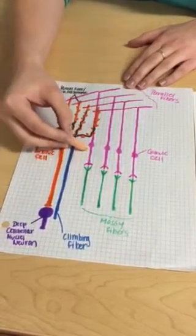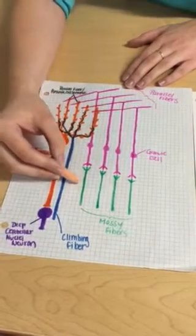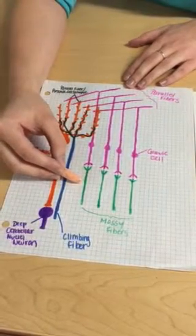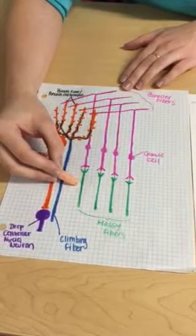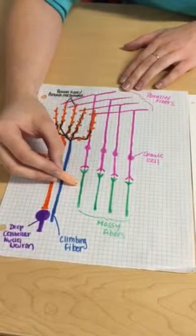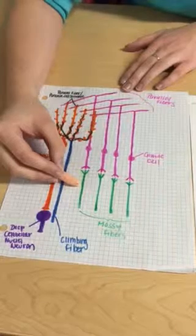They do this with high frequency but weak excitatory post-synaptic potential or EPSP. They bring in information about what's being planned and what's happening with somatic motor control.